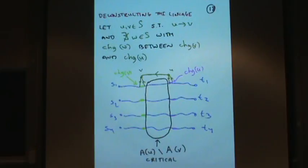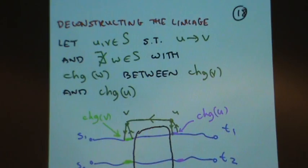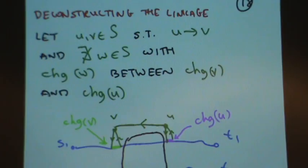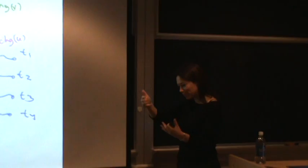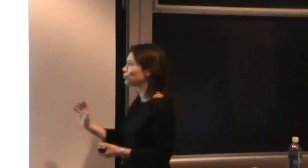Now I'm going to tell you how to deconstruct the linkage and bring it into this critical substance. Let me take a bunch of surplus vertices with a sequence chosen so that I cannot fit anybody with a changeover place between two vertices in my sequence. Actually, let's just take two vertices u and v. The changeover of v is before the changeover of u, and I'm assuming nobody has a changeover in the middle — I cannot fit anybody in between. So then I claim my deconstruction follows.